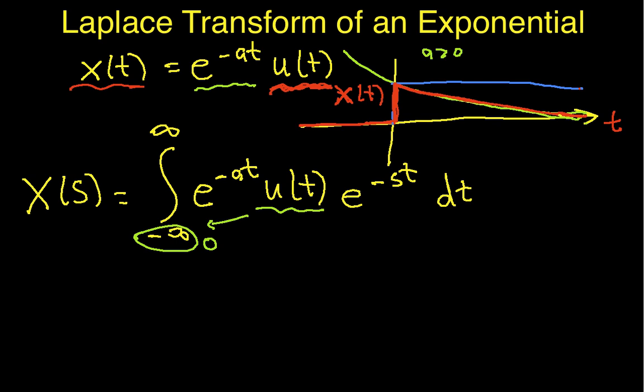So, for values of t greater than 0, this u of t is 1. So, I have e to the minus at times 1 times e to the minus st dt. So, I can write this then as the integral from 0 to infinity, e to the minus at, e to the minus st dt.